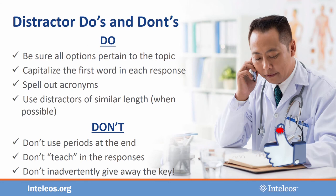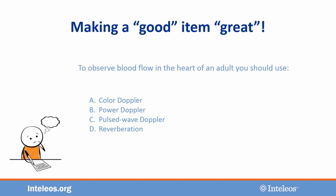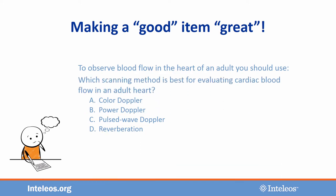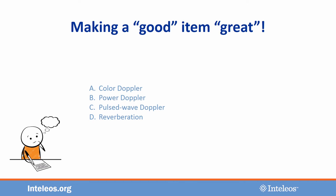Let's look at some first drafts of items and see how they can be improved. First, let's examine the stem: 'To observe blood flow in the heart, you should use.' This stem is a statement, or fill-in-the-blank. Our stems need to be in the form of a question. Also, we don't use personal pronouns like 'I' or 'you.' Please be sure to use correct medical terminology as well. Now let's look at the distractors. Even without the stem, the fourth distractor stands out as being different from the rest, and will likely provide a cue to the test taker to select or eliminate it.